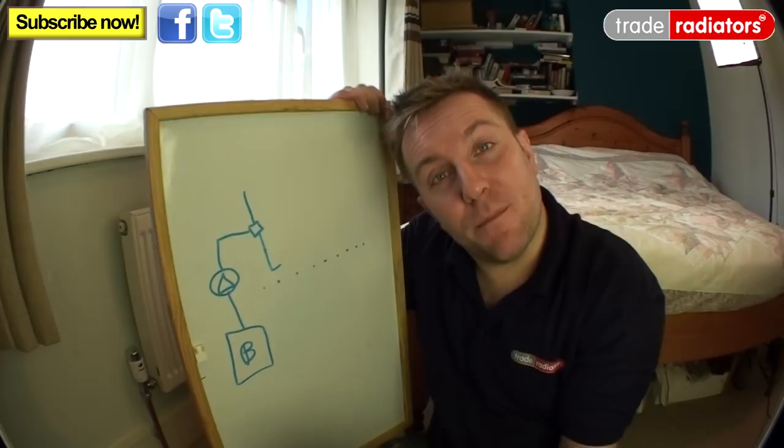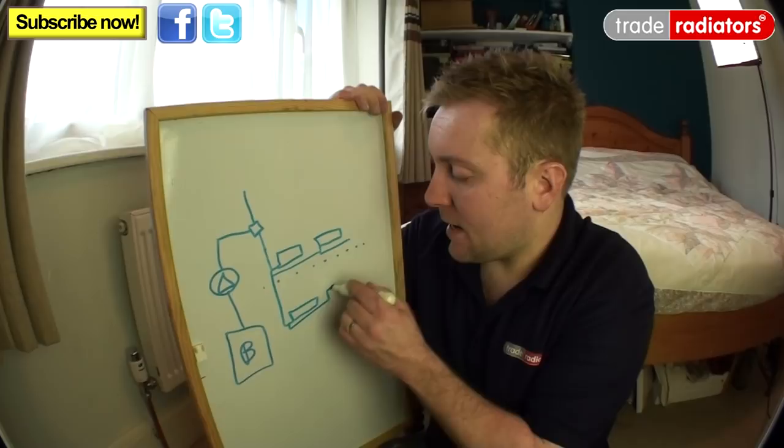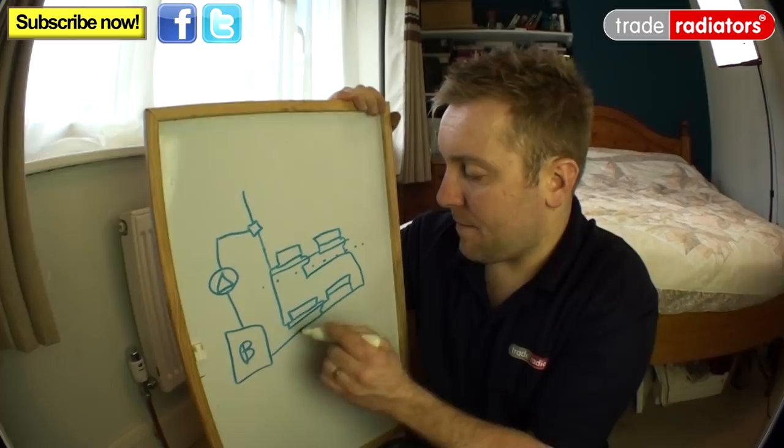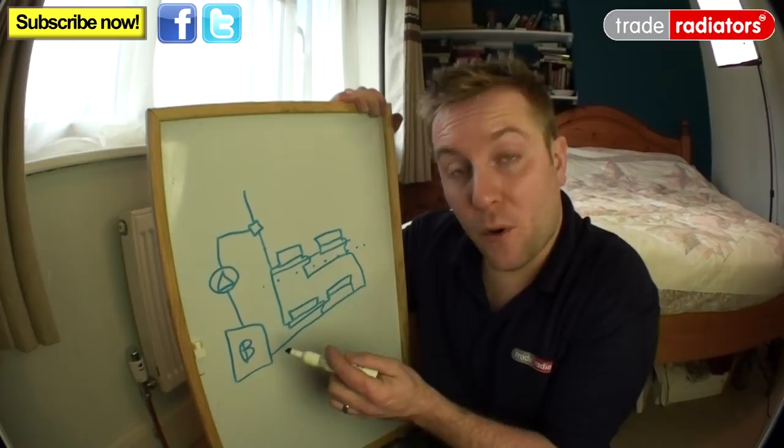If we look at this system here, we have a radiator here, a radiator here, and then downstairs we have another radiator there, and another radiator there. They all have common returns going back to the system and back to the boiler. Basically, this radiator is first in line and also it's upstairs, which means it's going to get loads and loads of flow from the boiler and the pump, and then it's just going to go back to the boiler and not go around the other radiators.